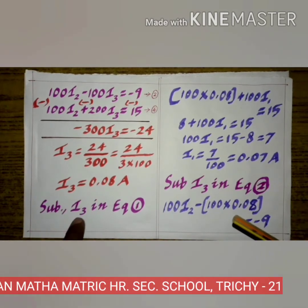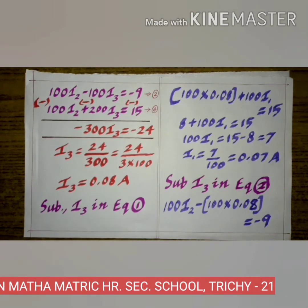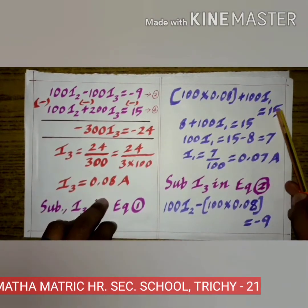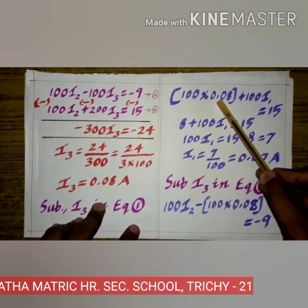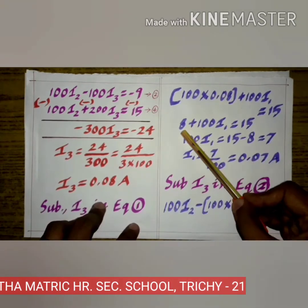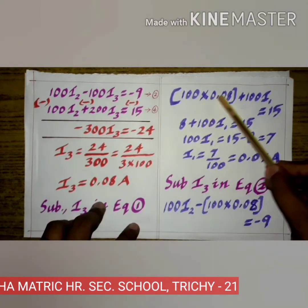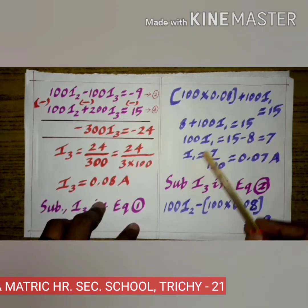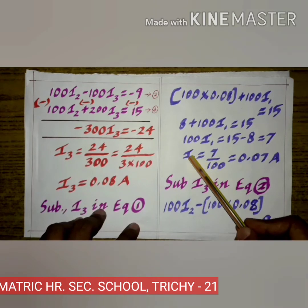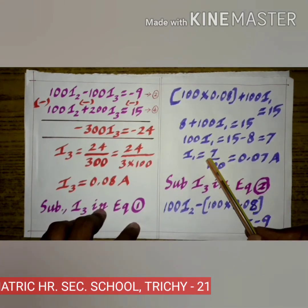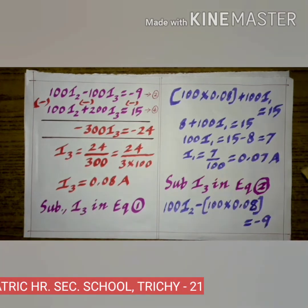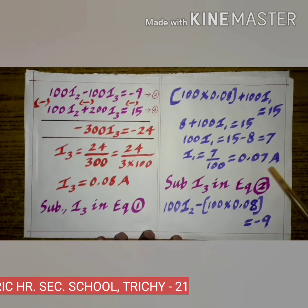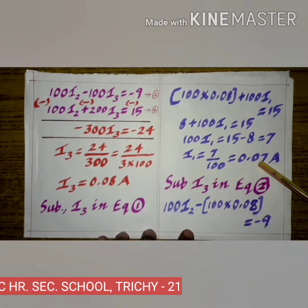Now substitute I3 into Equation 1. Equation 1 is: 100 I3 plus 100 I1 equals 15. Substituting I3 equals 0.08: 100 into 0.08 gives 8. So 8 plus 100 I1 equals 15. Taking 8 to the right side: 100 I1 equals 15 minus 8 equals 7. Therefore I1 equals 7 divided by 100, which gives I1 equals 0.07 ampere.